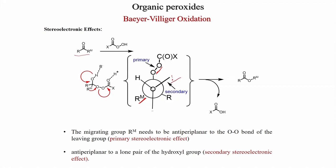The stereoelectronic effects determine the anti-periplanar orientation in Baeyer-Villiger oxidation, and you get the ester; the peracid becomes the carboxylic acid. One oxygen goes to the carbonyl compound giving the ester, and one oxygen is liberated — the peroxy acid becomes a carboxylic acid.